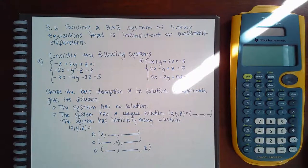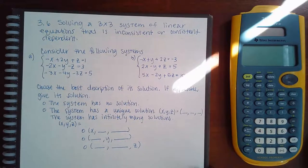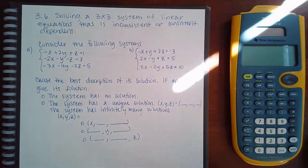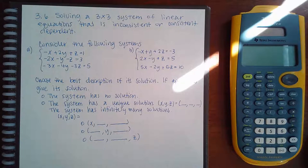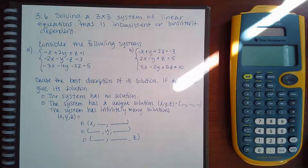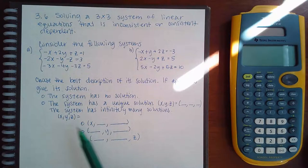Here in section 3.6 we're solving a system of linear equations that is inconsistent or consistent dependent. The problem asks us to consider two different systems, check the best description of each solution, and if applicable give the solution. The system has no solution, the system has a unique solution, or the system has infinitely many solutions — and you need to describe what those solutions look like.